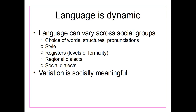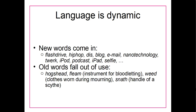Another aspect of language is that it is dynamic. We've already talked about how language can vary across social groups — our choice of words, the style we talk in, the level of formality, the different dialects we use. These can all vary across social groups. This variation is socially meaningful, meaning we use it to show that we belong to a certain group, and it can signal social status. Another way language is dynamic is that new words are coming in all the time. In addition to varying across social groups at a single point in time, language can also change within a social group as time goes on.